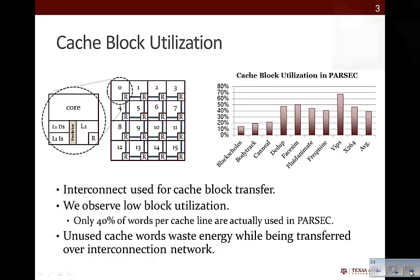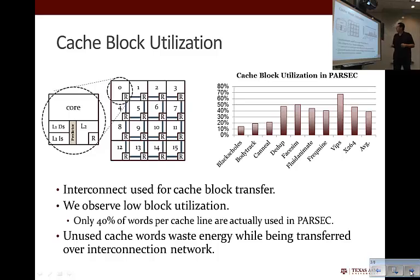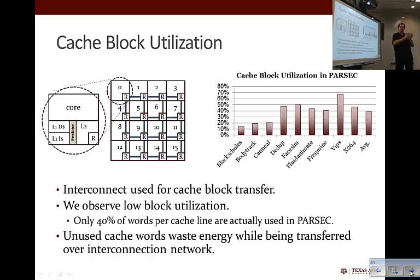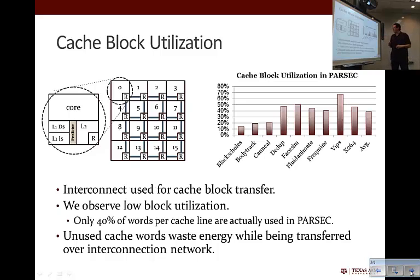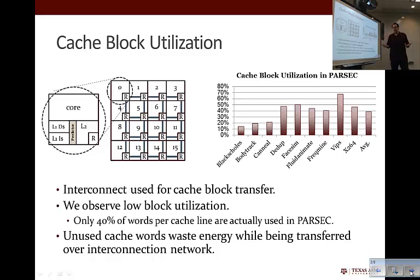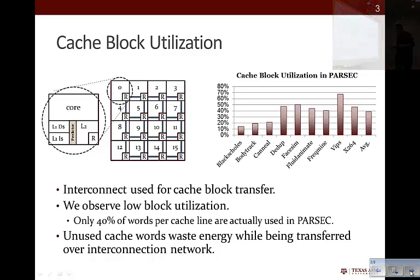The question then is: what is the utilization of those cache blocks? The diagram here on the right shows the average utilization of cache words within a cache line. This literally means we monitored cache lines and found out how many words were actually touched prior to the eviction of that cache line. While there's some variance in the utilization results, generally the utilization is quite low — on average, only about 40% of the words are actually utilized before the cache block is evicted. So it's very low and relatively sparse utilization, and this is what we're going to leverage in our technique to lower energy in the interconnect.